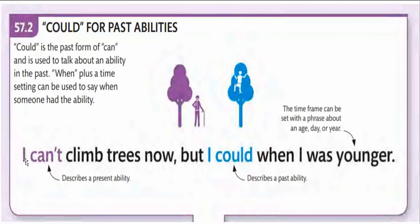Here is an example: 'I can't climb trees now, but I could when I was younger.' 'Can't' describes the present inability, and 'could' describes the past ability. The time frame can be set with a phrase about age, day, year, etc. A time marker is essential when mentioning ability in the past.